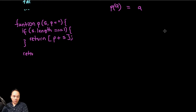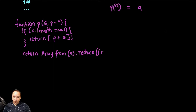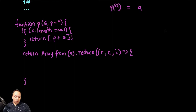Now for the iteration: we're going to return and convert the string into an array using Array.from, which takes each element of the string and gives us an array. Then we're going to use the reduce function. Reduce takes a callback with three parameters: the result or cumulative value 'r', the current element 'c', and the index 'i'. The initial value for the reduction will be an empty array.